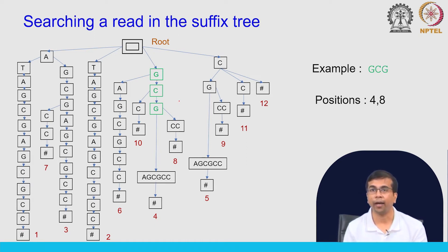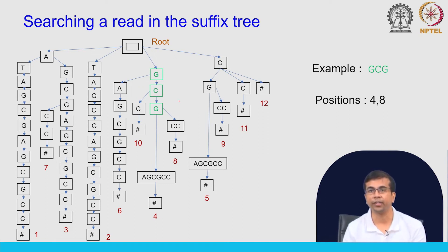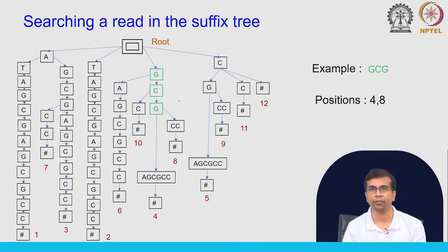Because we have two paths going through these nodes for GCG, you can identify there are two positions where you find this read matching: position 4 and position 8. Searching for repeat sequences is actually very easy in this kind of structure — you do not have to repeat this process multiple times across multiple paths like we do in hash table based algorithms.